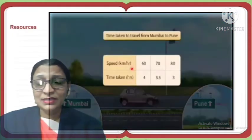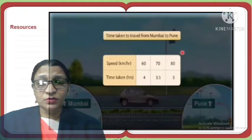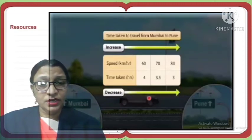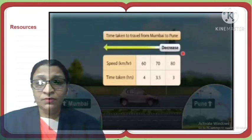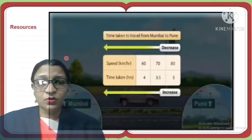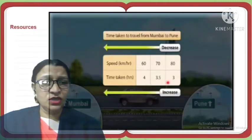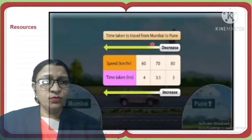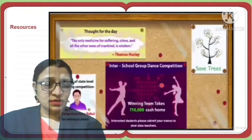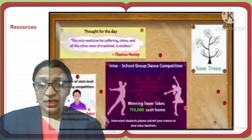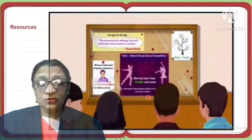Inverse variation means when one quantity increases, the corresponding other quantity decreases. For example, as the speed of a car increases, the time taken to travel from Mumbai to Pune decreases. Here is an inter-school dance competition where the winning team gets a cash prize of rupees 10,000.